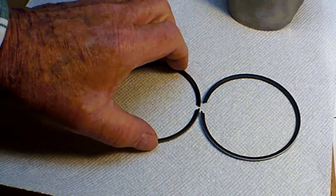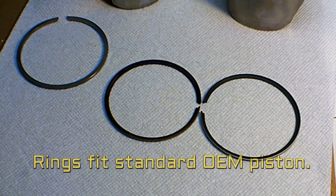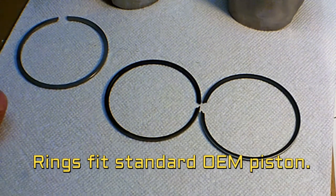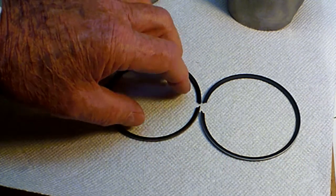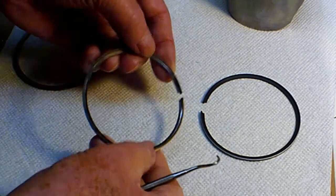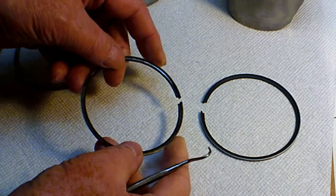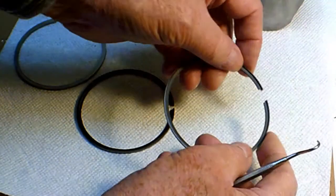They're going to get squeezed together when they're in the cylinder of course, but over time as the engine runs the piston rings are going to get worn. And I would say that this original one that came off my engine is losing some of its spring here. It's not quite as much tension as this one.